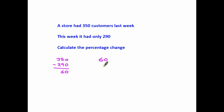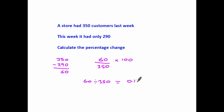We follow exactly the same rules. We make a fraction by putting the change over the original, which is 350, and then we multiply by 100. So 60 divided by 350 gives us an answer of 0.1714 — it does go on to a much larger decimal from a calculator. We then take that decimal and multiply by 100, just as we did before, and the answer we get is 17.14.